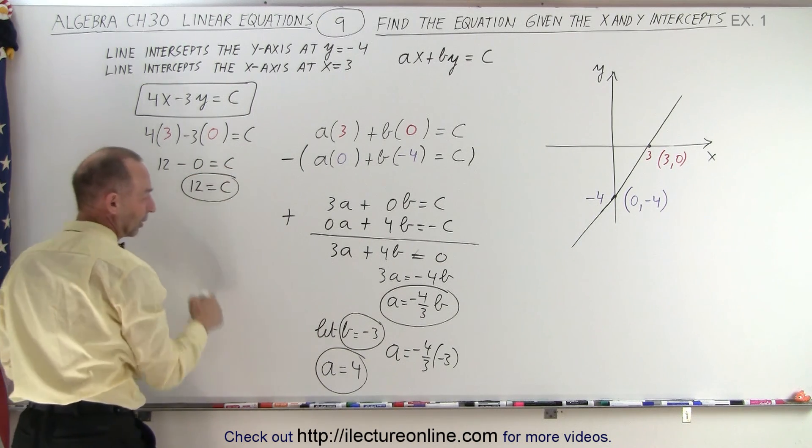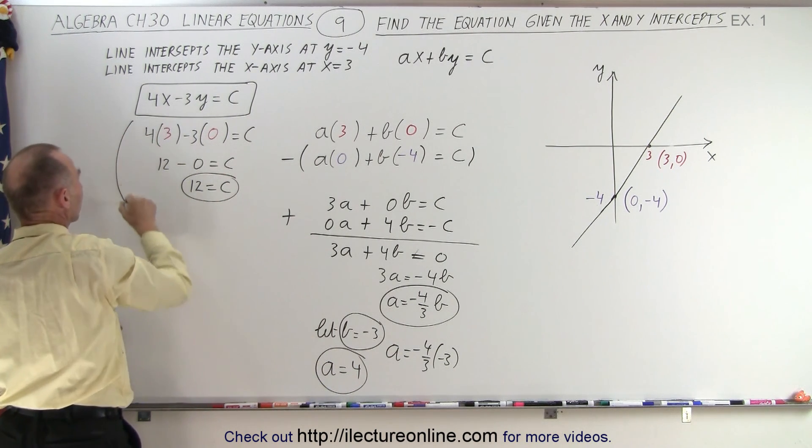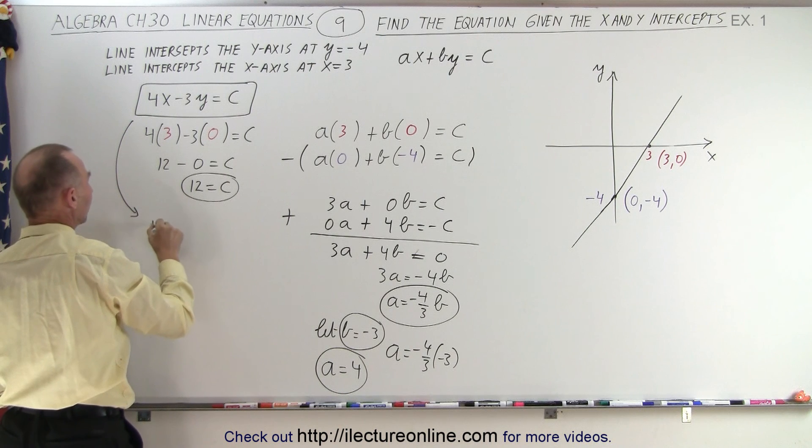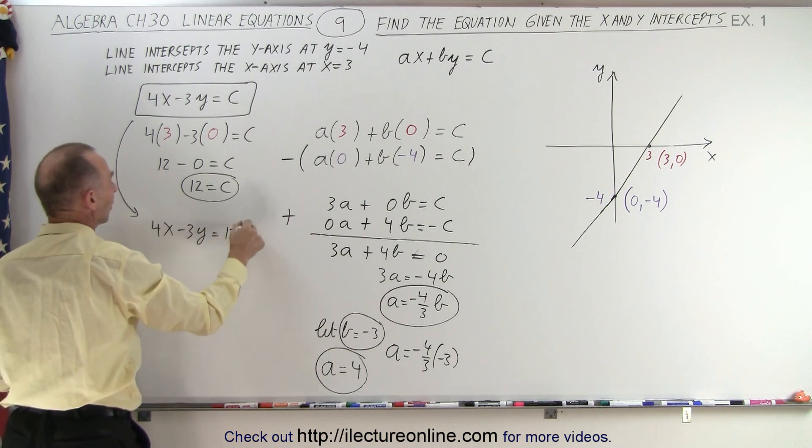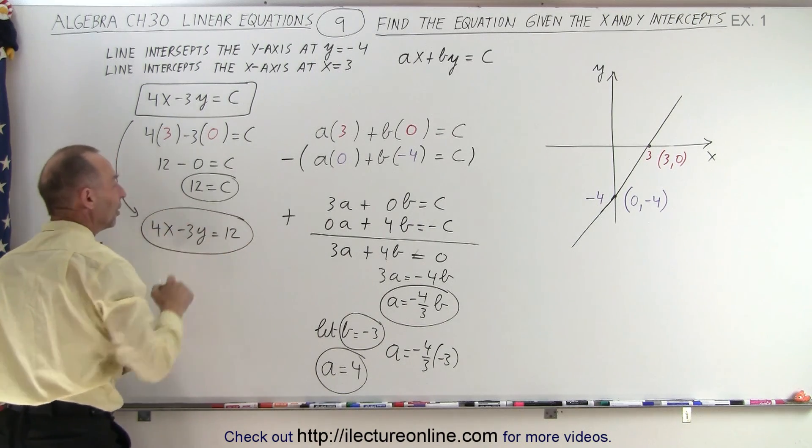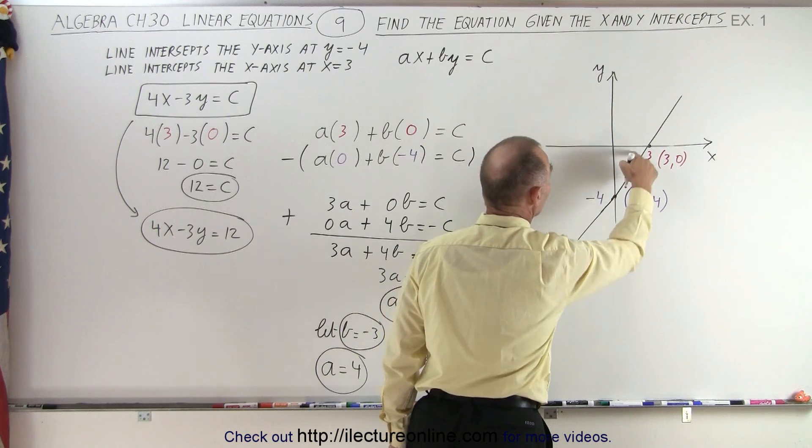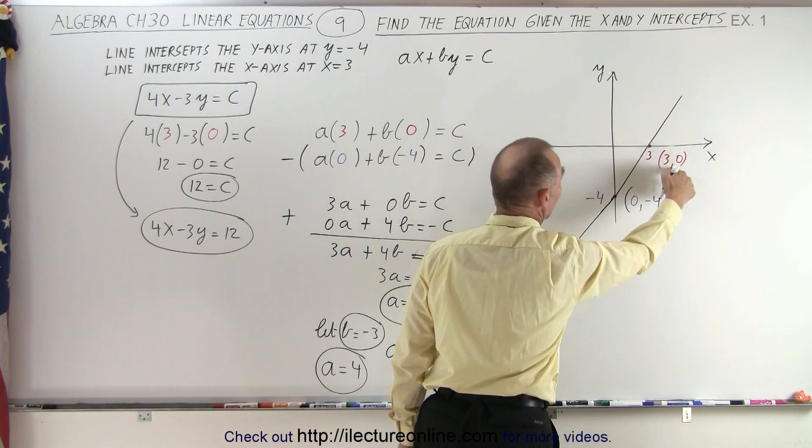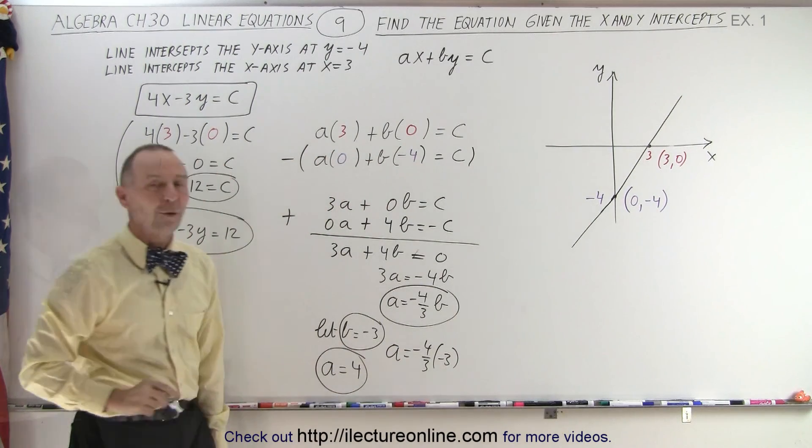So, now not only did I find a and b, I also found the value c. I can plug that into my equation right here. And my equation becomes 4x minus 3y is equal to 12. And there's an equation that we found of the line that passes through the two intercepts: x equals 3, y equals 0 and x equals 0, y equals negative 4.